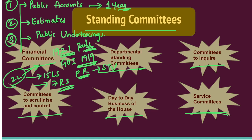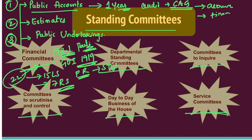A minister cannot become a member of the committees. The chairman of the Public Accounts Committee is appointed by the speaker and can be either from the ruling party or from the opposition party. The function of the Public Accounts Committee is to examine the annual audit report of the Comptroller and Auditor General of India, who submits three reports: a report on accounts, a report on finance, and a report on public undertakings. The committee also examines money spent on any service during the financial year for which an excess amount was spent beyond what was granted by Lok Sabha.